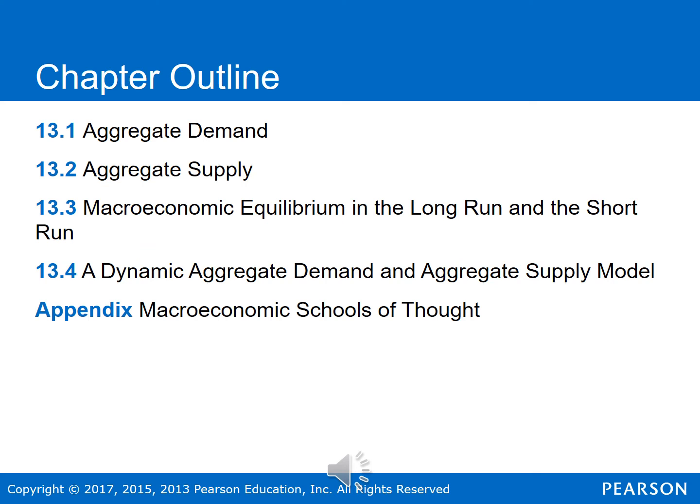So in this chapter, first we're going to look at aggregate demand — we're going to try to understand the demand side of the macroeconomy. From there, we'll move on to aggregate supply to understand that portion of the macroeconomy. In the third section, we'll look at macroeconomic equilibrium in the long run and the short run, putting together the aggregate supply and aggregate demand curves. And finally, we'll look at a dynamic aggregate demand and aggregate supply model in the final section of the chapter.